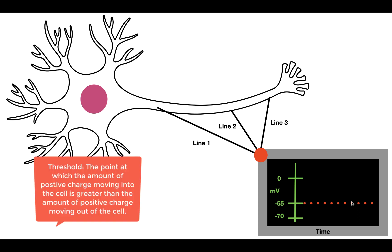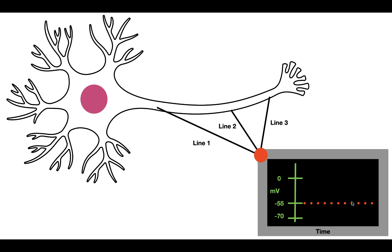Let's look at how an action potential varies from a sub-threshold potential. We apply a sub-threshold stimulus and measure it at line one, where the stimulus originated. At line one, the cell starts at rest, then depolarizes up to a certain point when the stimulus is applied, and then decays back down to the resting potential. The stimulus failed to reach the threshold, so it didn't create an action potential.